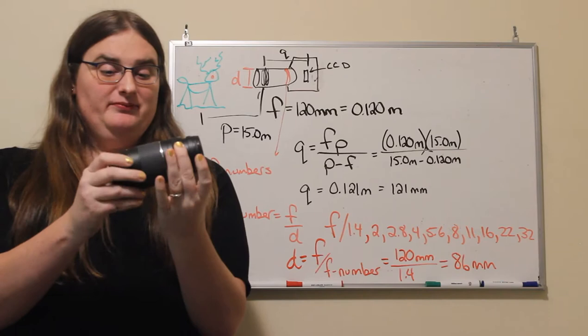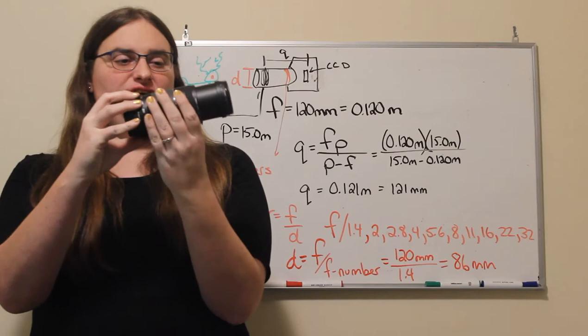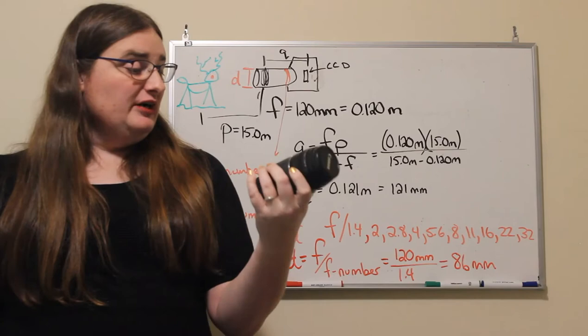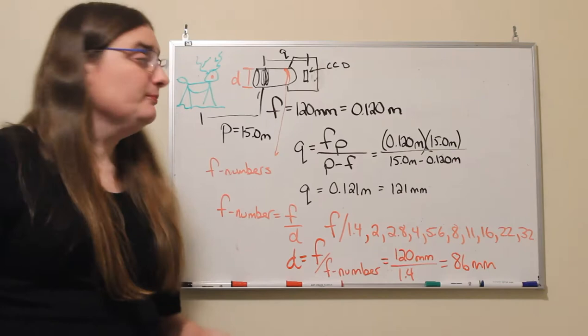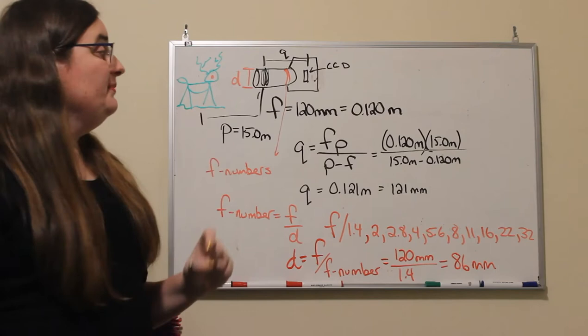By adjusting the barrel on this lens you can change the focal length of this lens, and then by fine tuning it you can adjust the position of that lens in order to end up getting a focused image. Let's say that the telephoto lens we're using has a focal length of 120 millimeters and we want to take a focused picture of an object that happens to be 15 meters away. What's going to be the image distance to get a focused image?